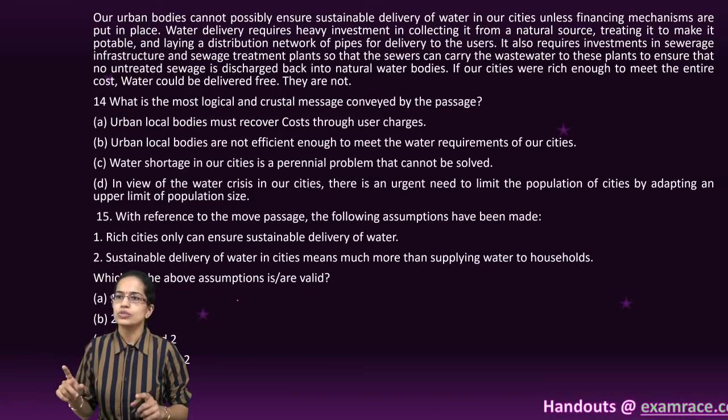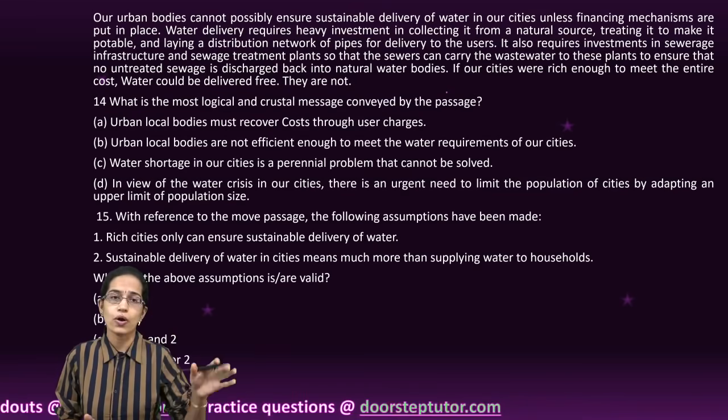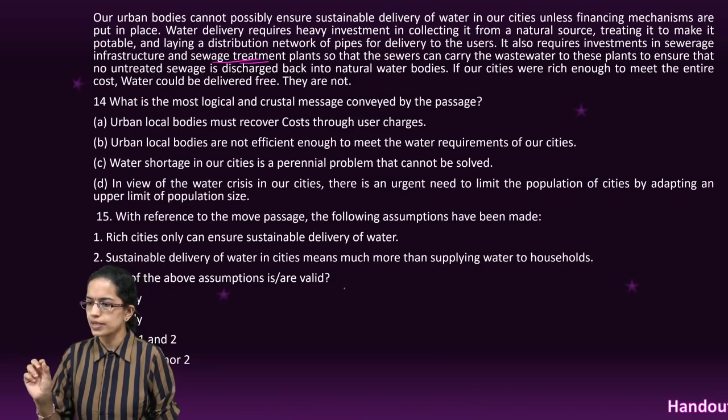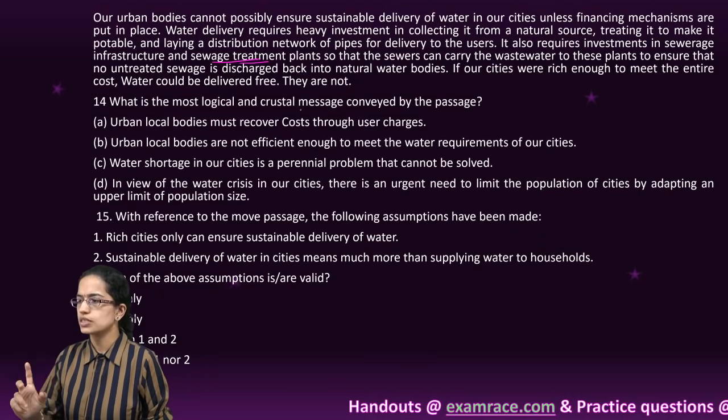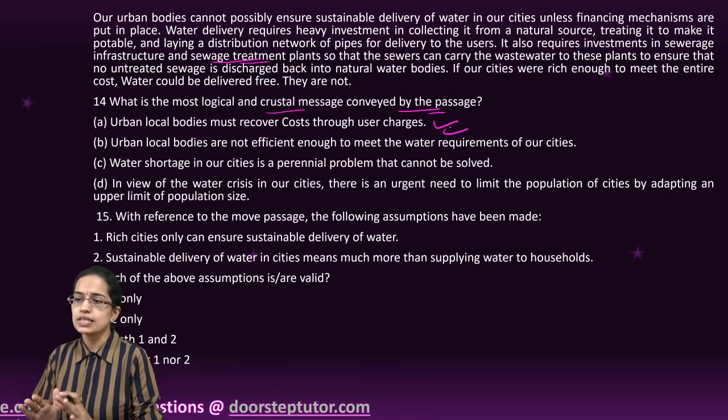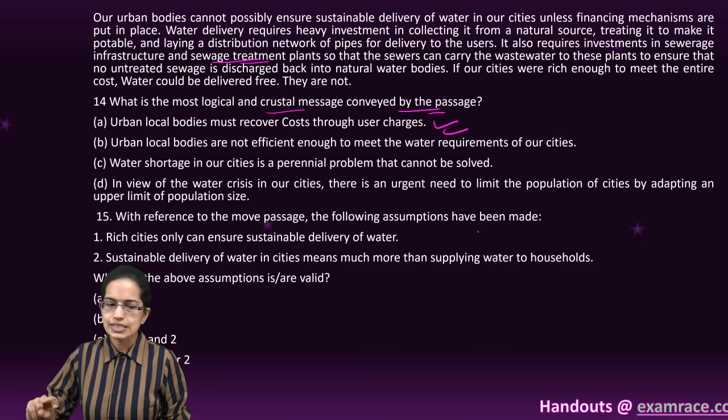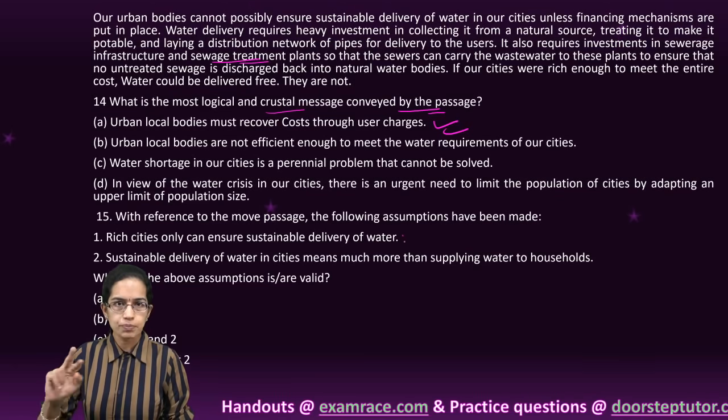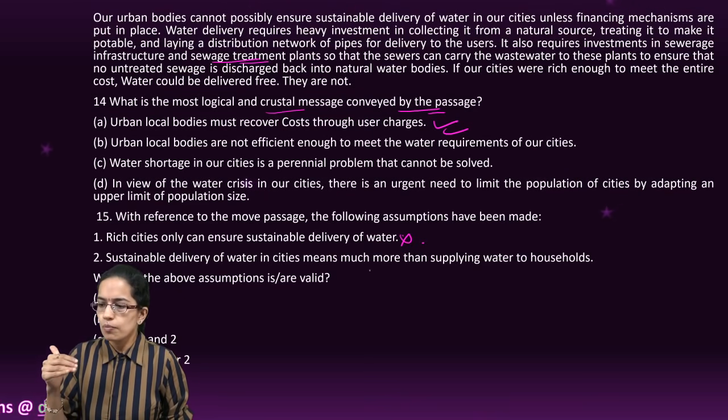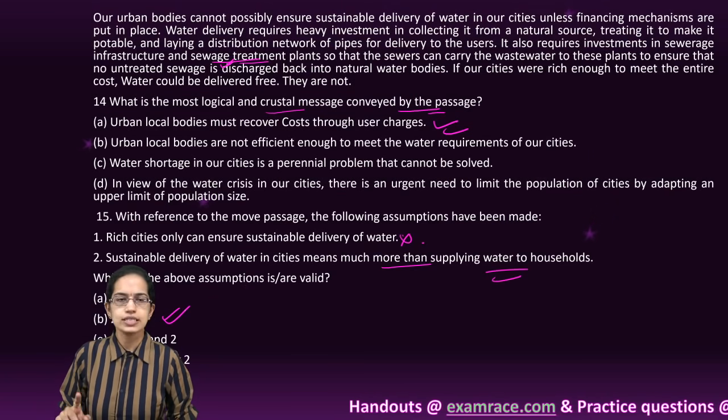The next question talks about water supply delivery in cities. Rich cities can meet the cost, those who cannot need support. The cost includes not just water supply but also sewage treatment. The first question asks what's the most crucial message. The crucial message is urban local bodies must recover costs through charges for sustainable delivery. The next question: sustainable delivery means much more than just supplying water, it includes sewage treatment. So two only is the right option.